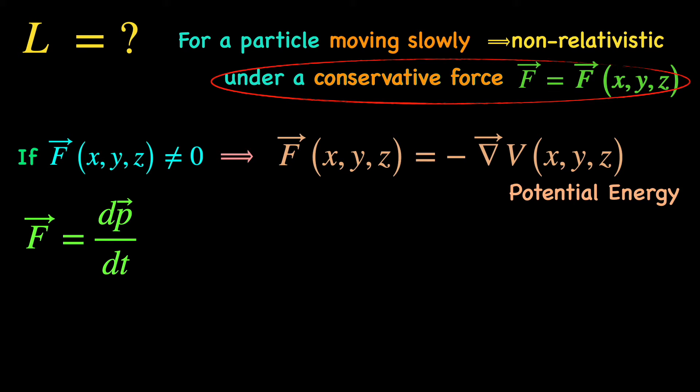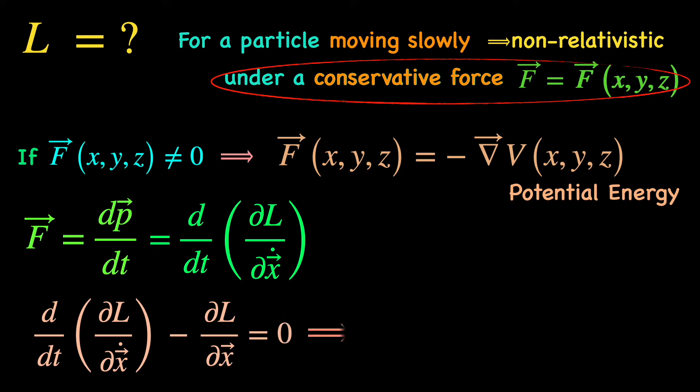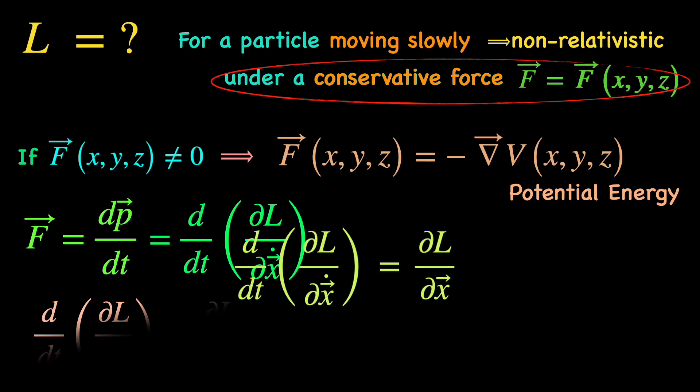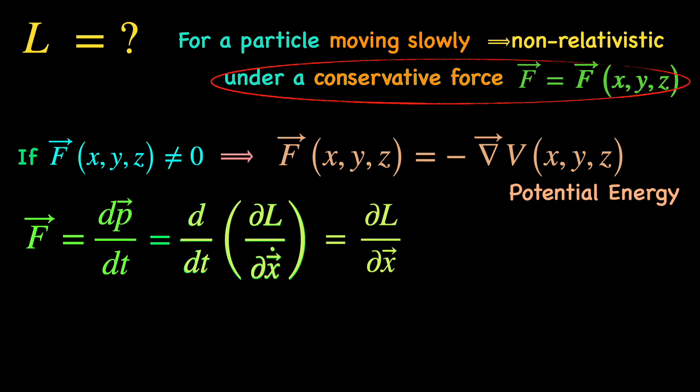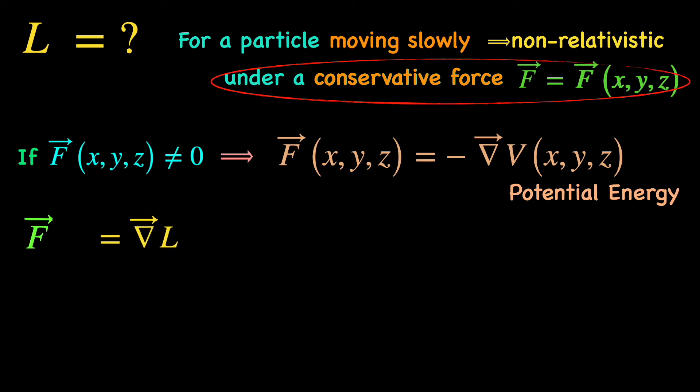Then again, Newton's second law says force is nothing but dp dt, that is time derivative of the momentum vector. And we know p is del l del x dot. That makes the right-hand side d dt of del l del x dot. But because of the Lagrangian equation, we can write d dt of del l del x dot as del l del x. If you are a little worried about taking all these derivatives with respect to vectors, that's no big deal. It's just a handy way of writing derivatives by all the components in one shot. So, del l del x vector is nothing but the gradient of the Lagrangian.